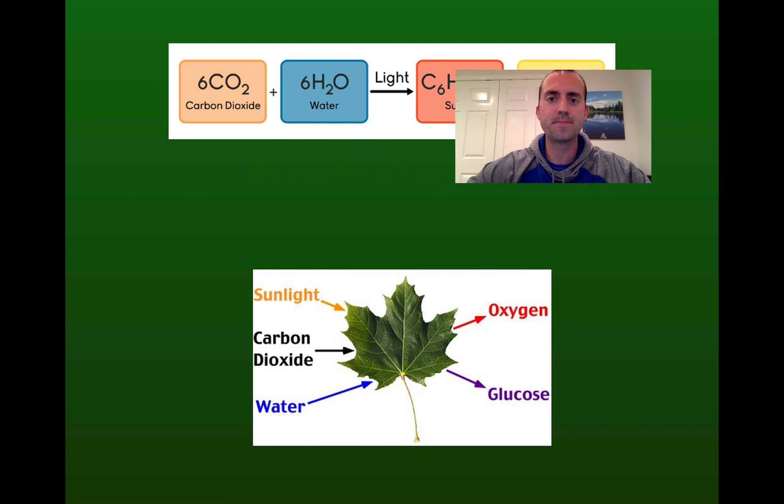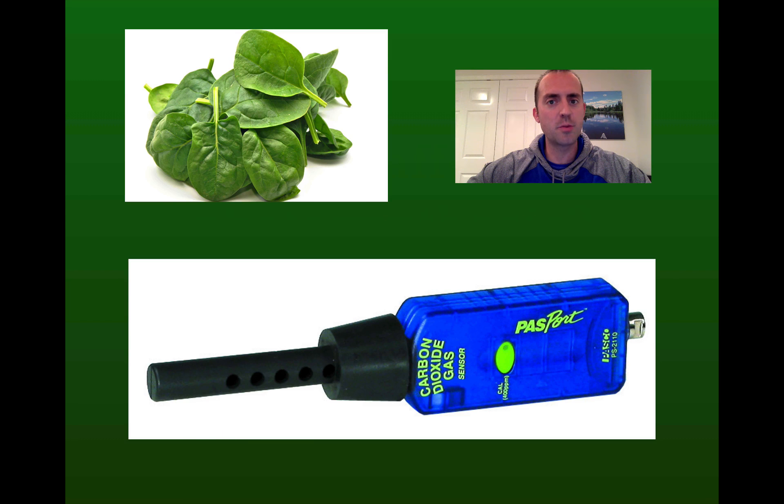Now below me you'll see the leaf of a plant. Leaves are the primary organ of plants that undergo photosynthesis by taking in carbon dioxide and water, absorbing light and giving off oxygen gas, and then storing the energy from that light as glucose.